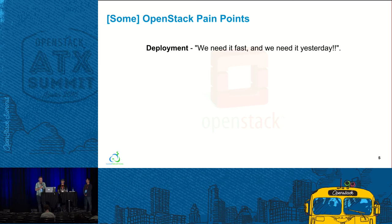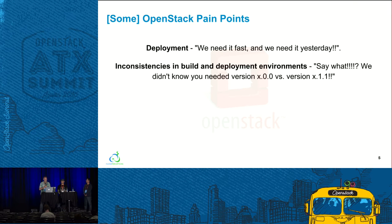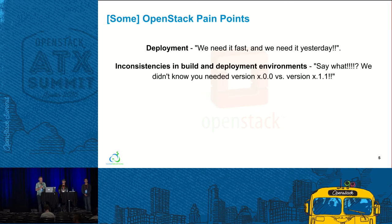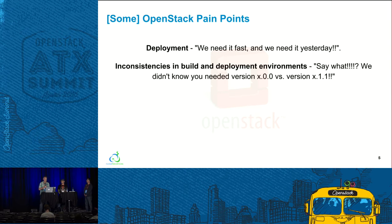Companies are left with a do-it-yourself approach or turning to turnkey solutions, each requiring their own skill sets. We run into inconsistencies between build and deployment environments — what worked last week doesn't work this week. Differing dependencies between development, staging, and production environments can lead to breakages all along the way, attributable to complicated organizational processes with many moving parts, many points of failure, and great opportunities for miscommunication.